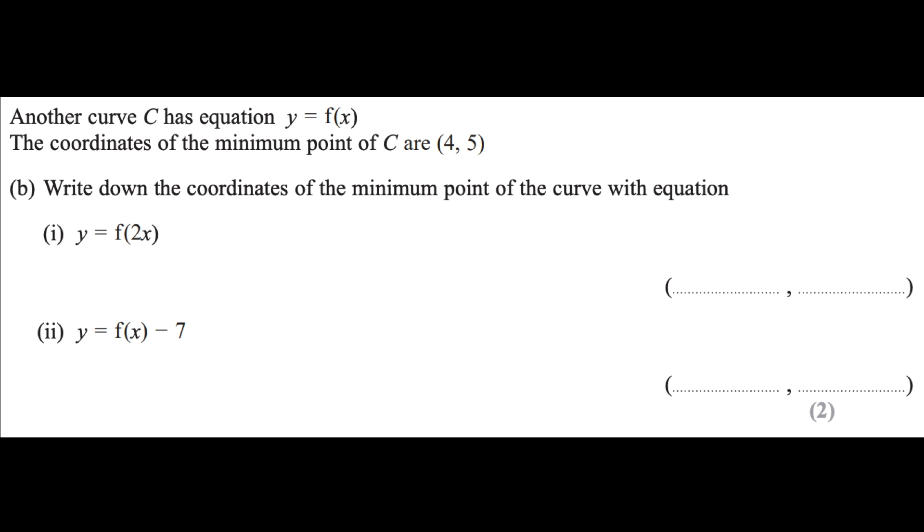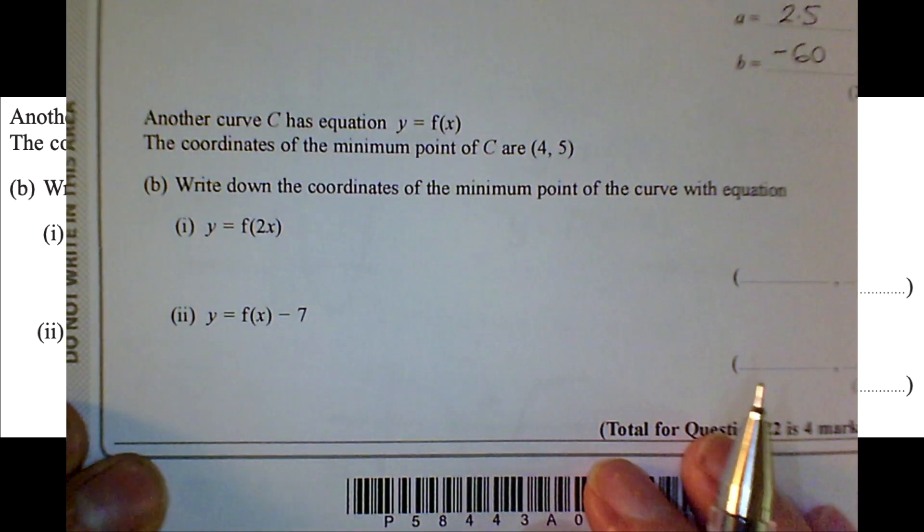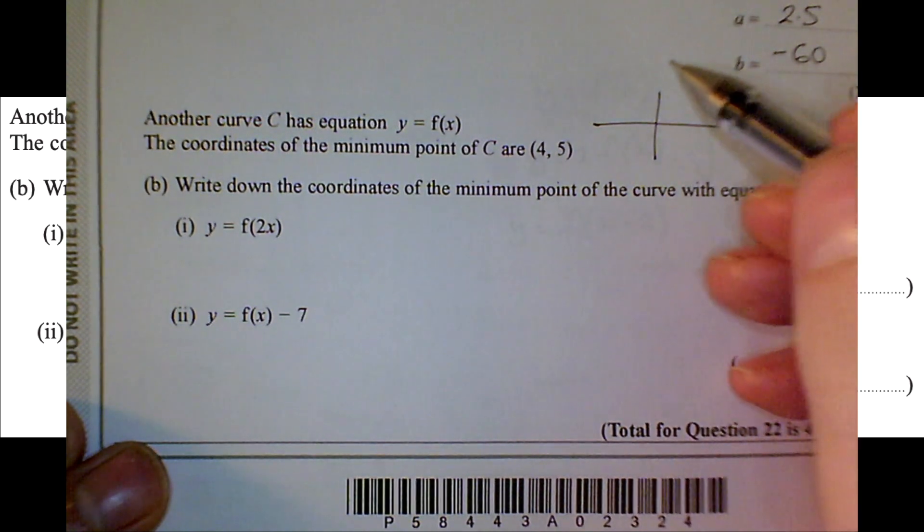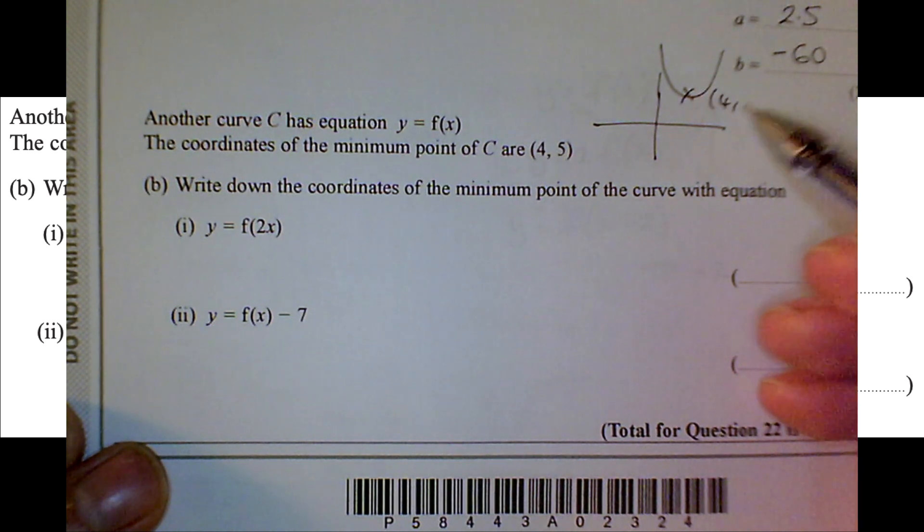Right, let's move on to the next part. We've got some other different kind of function. If I were you, make it easier. Just draw any old thing. Any old curve. We've just got a minimum point at 4, 5. So I'm going to draw a happy face quadratic. There it is. And that bottom bit is at the point 4, 5.